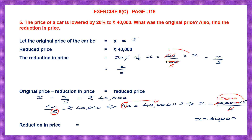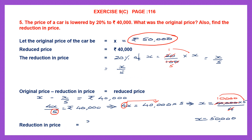The original price of the car is 50,000 rupees — this is the first part of the answer. Now we are also asked to find the reduction in price. From our working, the reduction in price is x by 5. We just found x to be 50,000, so the reduction is 50,000 divided by 5.